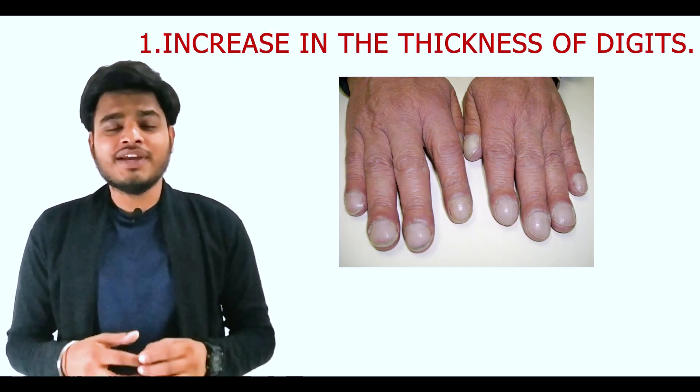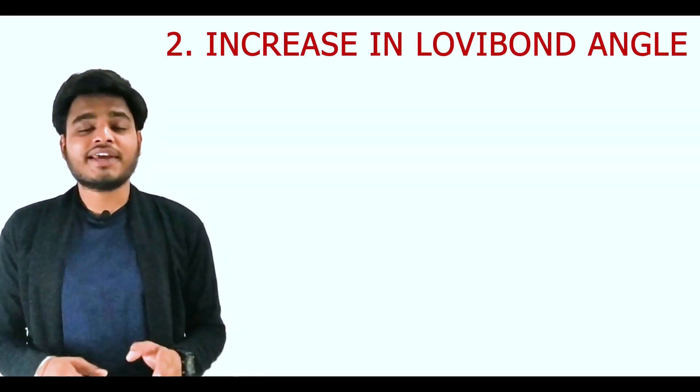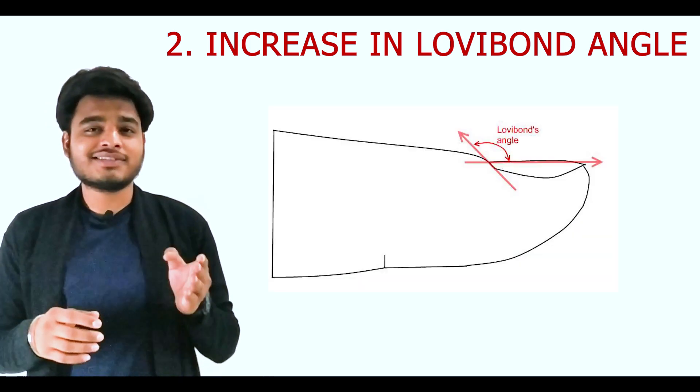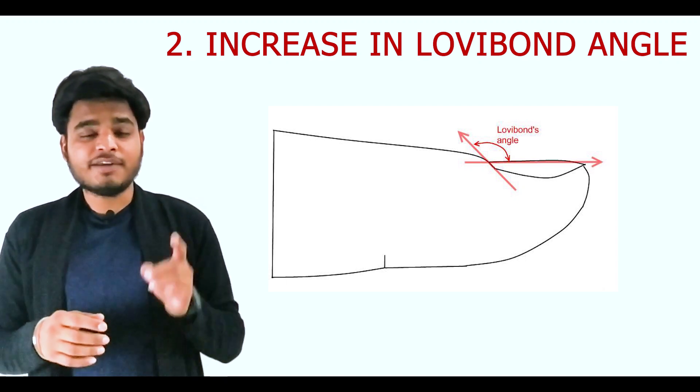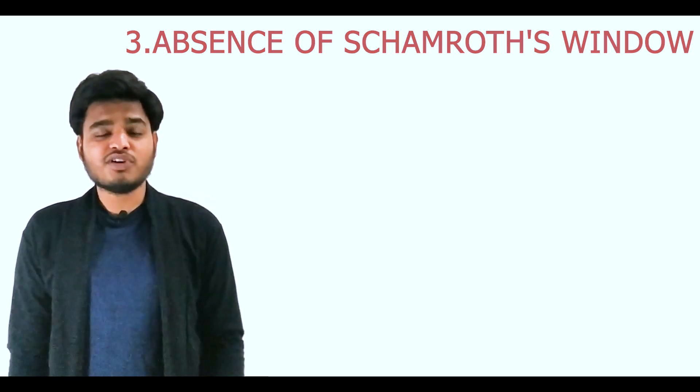Most cases of clubbing are associated with fluctuation of the nail beds. To examine this, fix the distal IP joint of the patient and apply corresponding pressure with your index finger to judge whether fluctuation is present. To confirm clubbing: first, increased thickness of the digit at the nail bed level compared to the distal interphalangeal joint; second, increase in the Lovibond angle — normally less than 165 degrees, but in clubbing it may reach up to 190 degrees; third, absence of the Schamroth window.